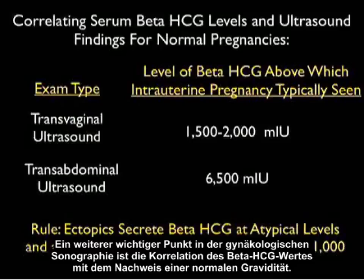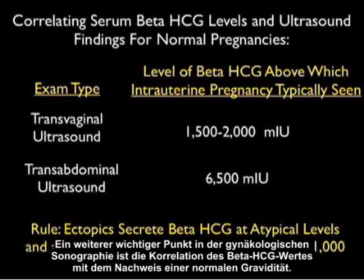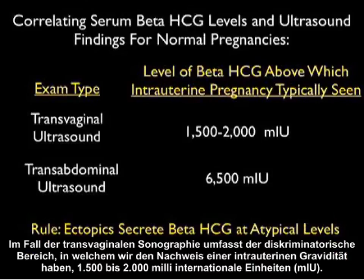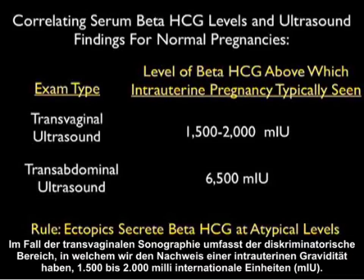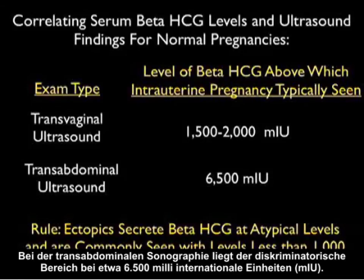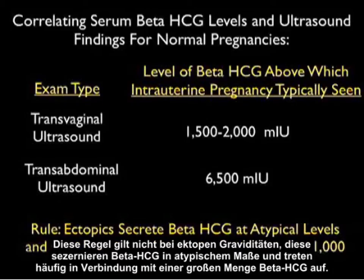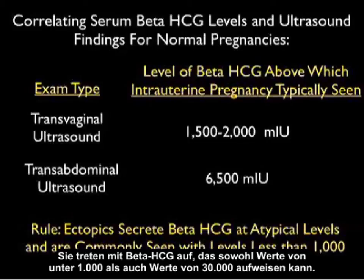Another important concept for OBGYN sonography is the correlation of serum beta-HCG to the findings of a normal pregnancy. For transvaginal sonography, the discriminatory zone at which we will see findings of an intrauterine pregnancy is about 1,500 to 2,000 milli-international units. For transabdominal sonography, the discriminatory zone is about 6,500 milli-international units. This rule does not apply to ectopic pregnancies, which secrete beta-HCG at atypical levels — they can be seen with betas lower than 1,000 and as high as 30,000.